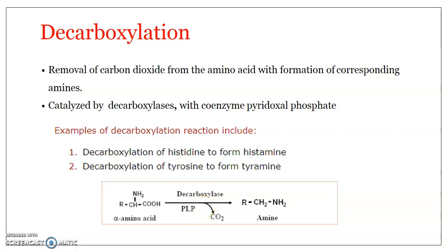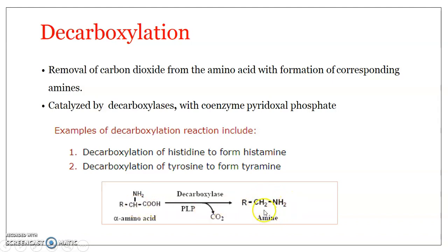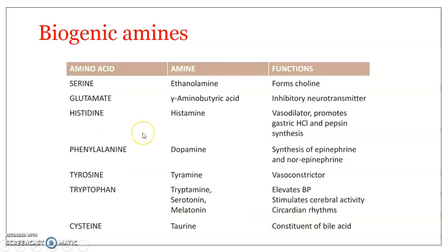Decarboxylation of amino acids results in the formation of corresponding biogenic amines. For example, decarboxylation of histidine results in the formation of histamine, and decarboxylation of tyrosine results in the formation of tyramine. Here you can see what happens: this is the alpha amino acid, and the alpha carboxyl group releases carbon dioxide. What remains is CH₂NH₂, which is an amine. This table shows the biological amines produced from various amino acids.